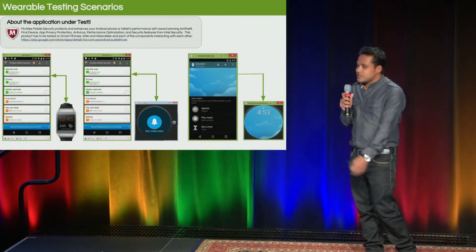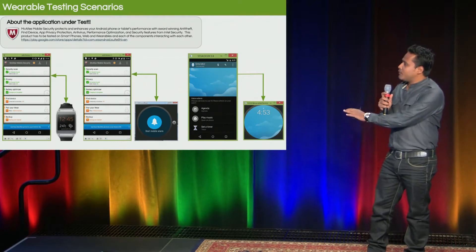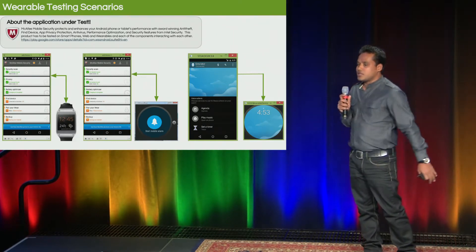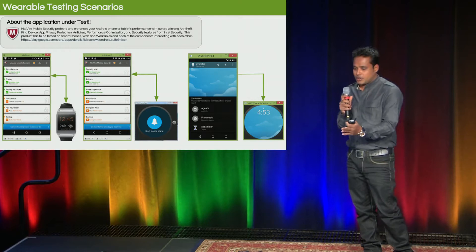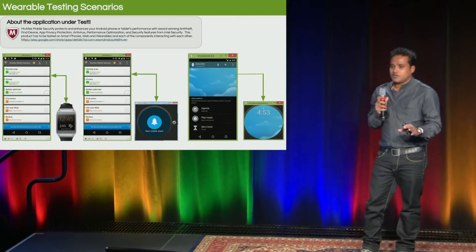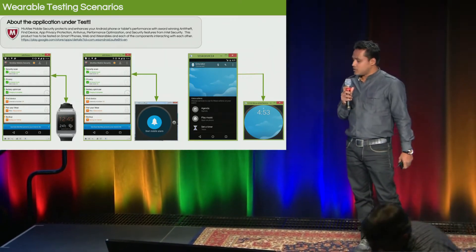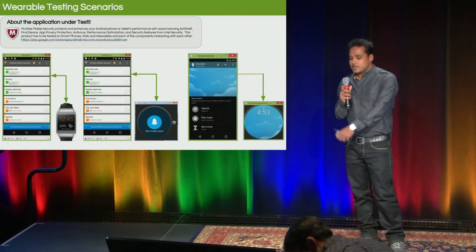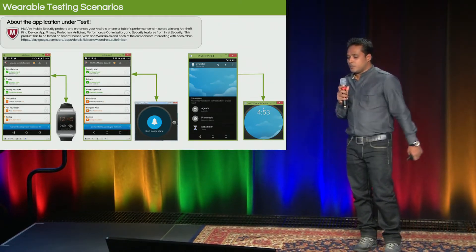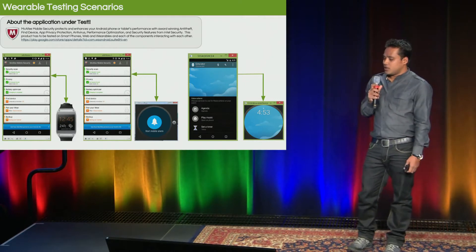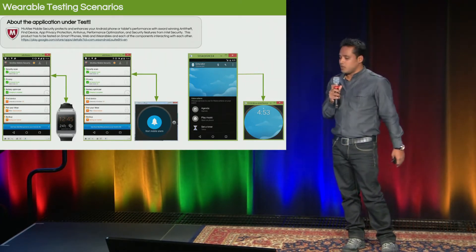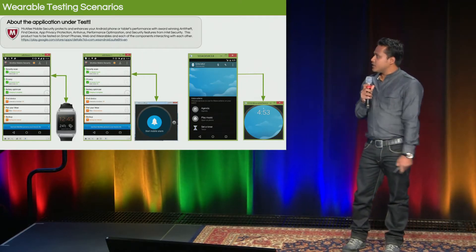Now, these smartwatches have three kinds of scenario connections. One would be on an actual device and an actual wearable or smartwatch. The second scenario would be an actual real device and an emulator — Android Wear emulator. And the third would be both things being emulators. Let's see how we can establish debugging sessions with the smartwatches and phones so that we can start writing our test scripts and do the automation.